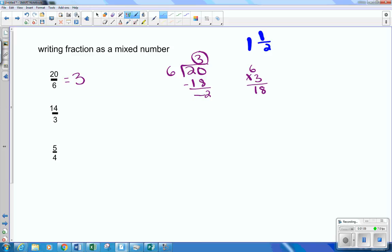My remainder is going to go on the top of the fraction. So that 2 will be my new numerator. And of course, the denominator doesn't change. So 3 and 2 sixths.